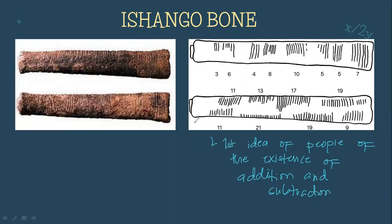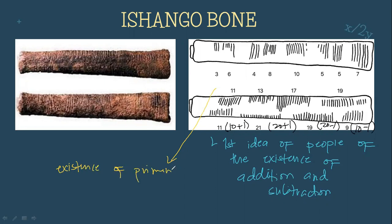Archaeologists also suggest that 11, 21, 19, and 9 represent the first idea people had of addition and subtraction. As you can see: 10 plus 1 equals 11; 20 plus 1 equals 21; 20 minus 1 equals 19; and 10 minus 1 equals 9. So these numbers suggest that people already had the idea of addition and subtraction. Furthermore, in another column, you can see prime numbers — so archaeologists believe prehistoric people already had an idea of the existence of prime numbers.